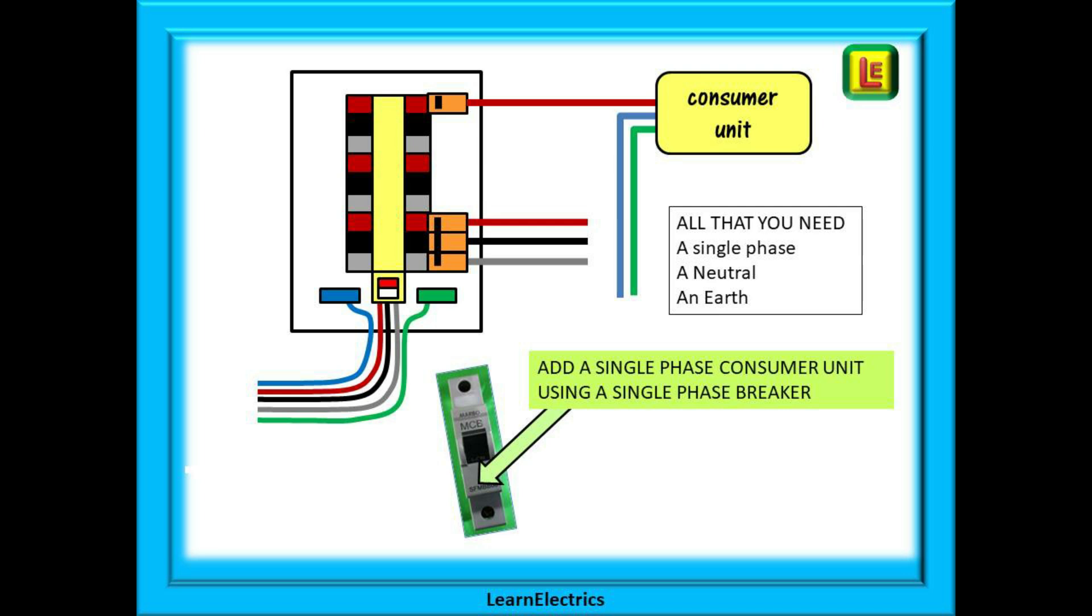Now we want to add a 230 volt single-phase consumer unit to the distribution board. Perhaps this new consumer unit is supplying an office where only single phase is required. So what do we need? A single-phase breaker to supply the new consumer unit, which in this case has been connected to the brown phase. A feed from the single-phase with the appropriate size cable for the load. A neutral and an earth. That is it. Think of a three-pin plug. What has a three-pin plug got? A single-phase, a neutral and an earth.